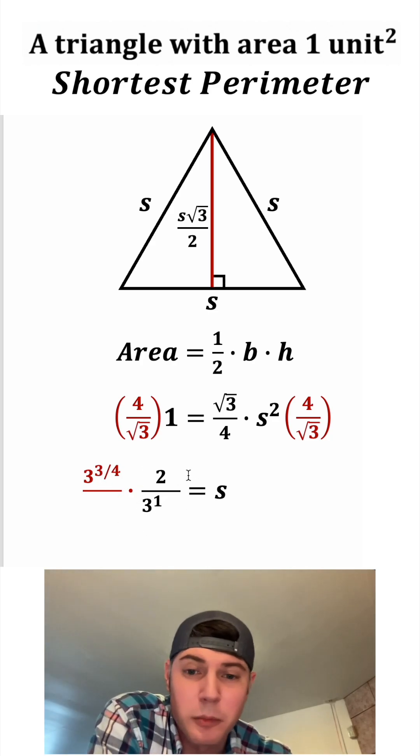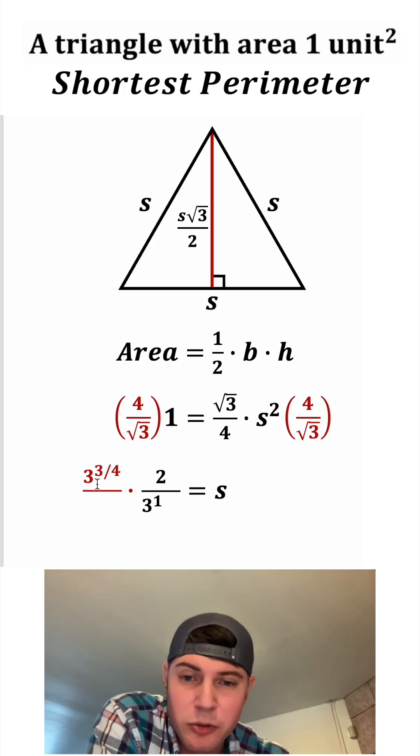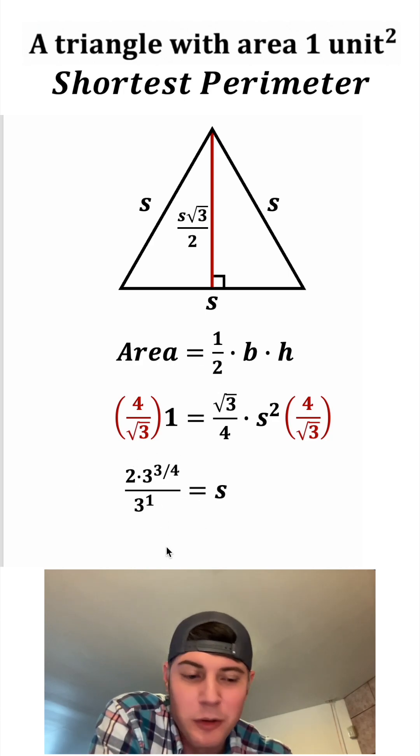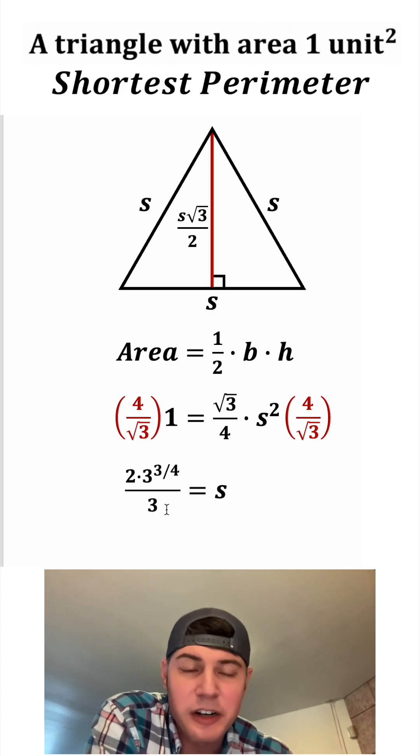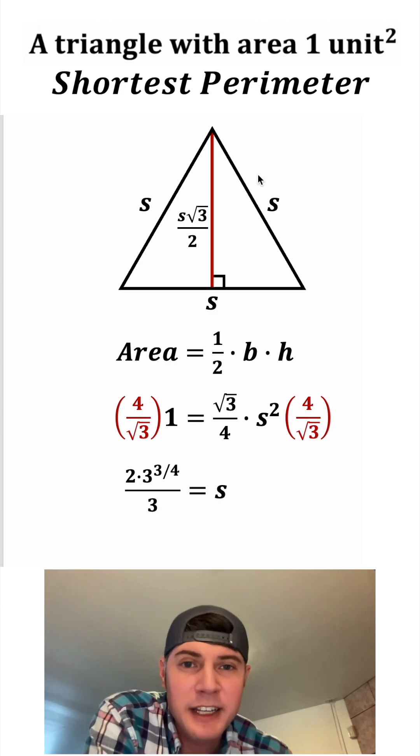And on top, we were just going to multiply these. So it's just going to be two times this. And then three to the one is equal to three. So this is our exact value for S in an equilateral triangle that has an area of one.